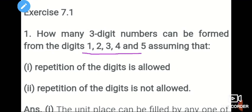How many 3-digit numbers? Here we have 3-digit numbers, formed from the digits 1, 2, 3, 4, 5. We will use these digits to form 3-digit numbers. We will understand this using the fundamental principle with a block diagram.